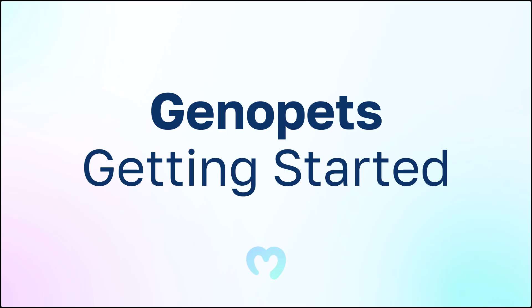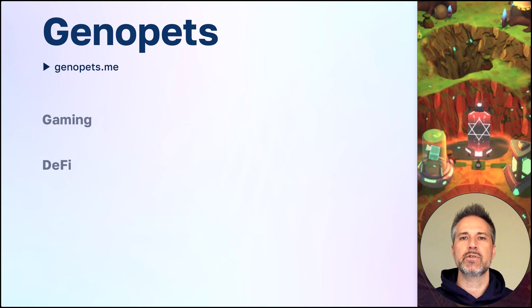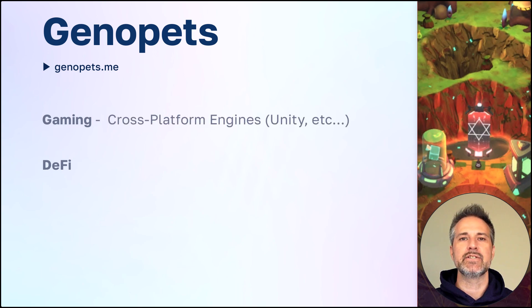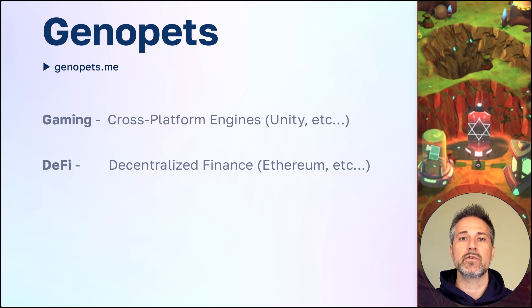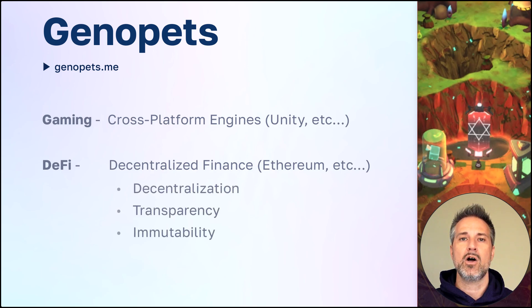Getting started with Genopets. Genopets is built upon emerging trends in the Web3 space: gaming and DeFi. Many teams use an existing game engine for the 3D rendering, input, and other aspects of low-level gameplay. Decentralized finance is among the first trends emerging from Web3. Hallmarks of this blockchain technology include decentralization, where data is stored across a network; transparency, where data is stored in a public and open way; and immutability, where data can be appended to but never deleted or changed.